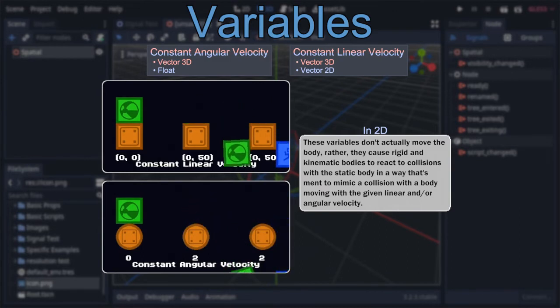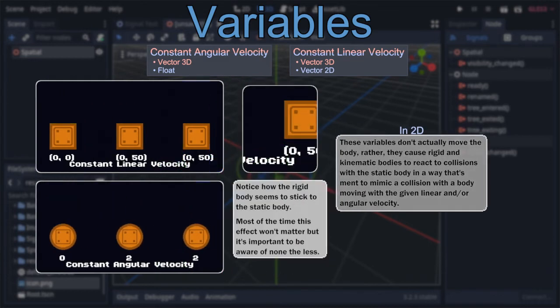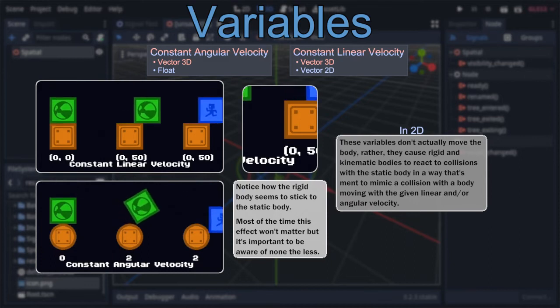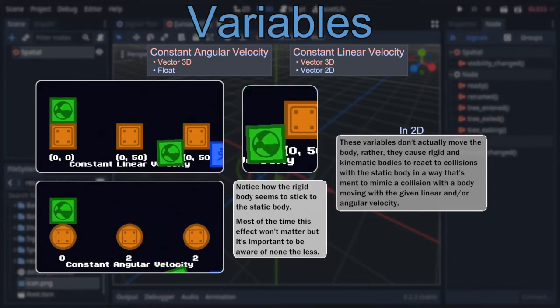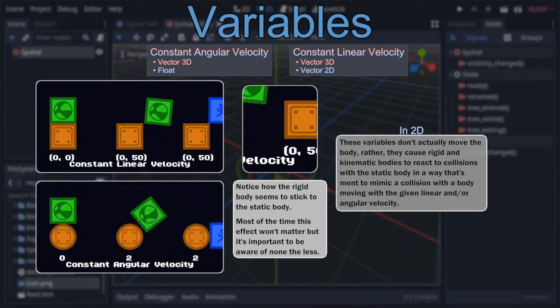This is meant to make any colliding body react as if the static body was moving, but it can also cause an odd effect specifically with rigid bodies where they seem to stick a bit to the static body, as can be seen in my example. This is due to the colliding body applying a force that keeps pushing it back into the static body, causing a bit of a feedback loop until it slides all the way off.